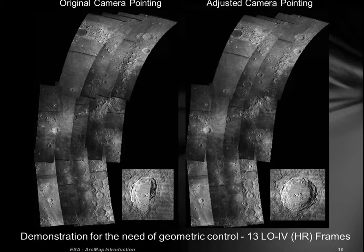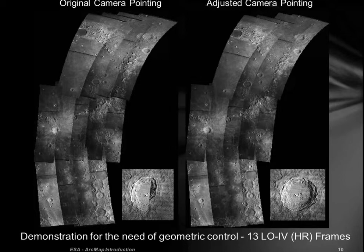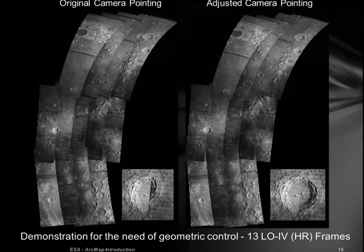There's the original SPICE, the original camera pointing, and then we go through and adjust the camera pointing. You can go back, update the SPICE kernels and the camera pointing so that your images better align. On Earth you typically only register images together without going back to modify the spacecraft. Why is that important? If you have multiple instruments, you can use that same backwards control to register another instrument. This is actually older lunar orbiter data — with the original camera pointing you can see the craters are misaligned.